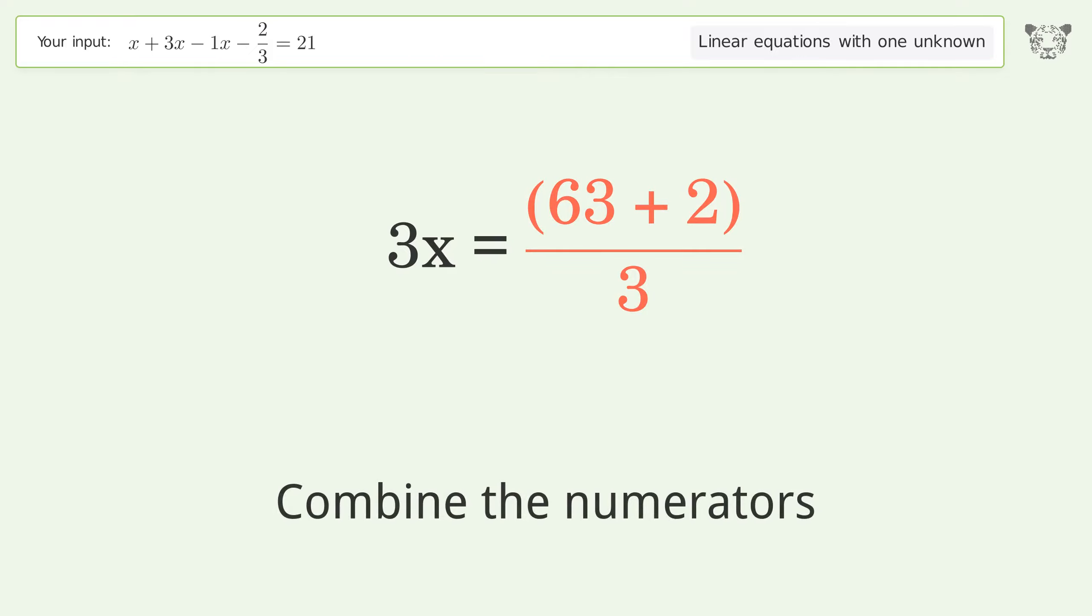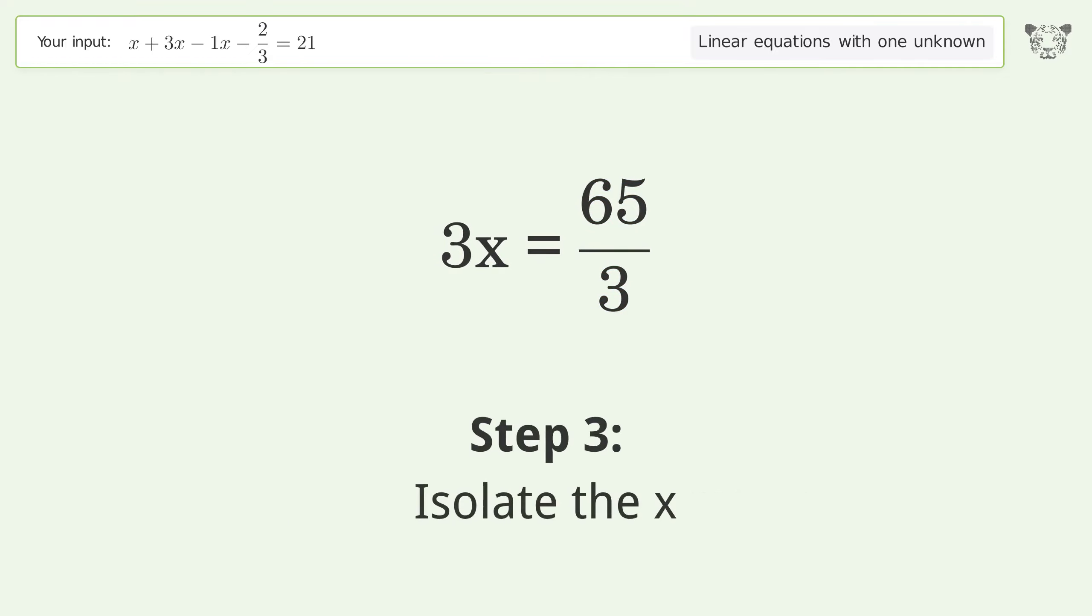Combine the numerators, isolate the x. Divide both sides by 3, simplify the fraction. Simplify the arithmetic.